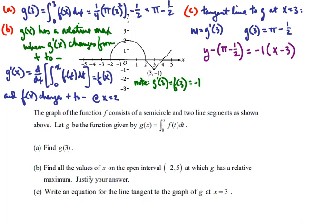If we simplify a little and solve for y, then we end up with y is equal to negative x plus pi minus 5 halves. So that's for part c.